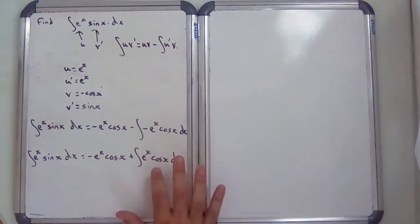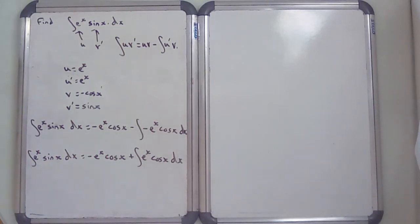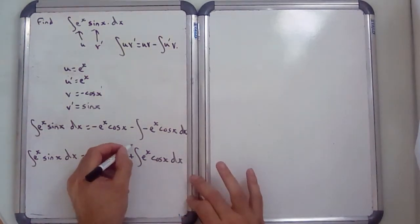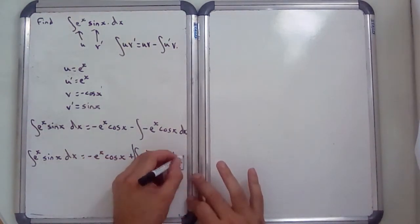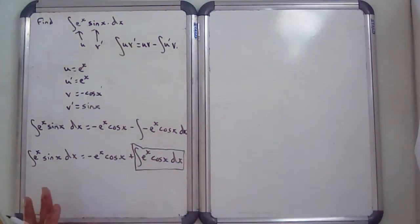There's a problem: this new integral doesn't look too dissimilar to the original one, so you can't just say the answer is that. What we're going to do is go through integration by parts again. I wouldn't recommend doing it more than twice, but if you do it twice there is a way to find the integral from the results you've got — I won't give too much away yet.